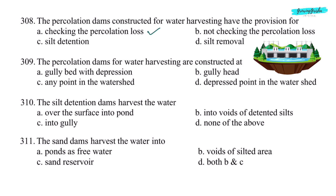Next question: silt detention dams harvest the water — option B, into the voids of detained silts. Next question: sand dams harvest the water into — option D, both B and C.